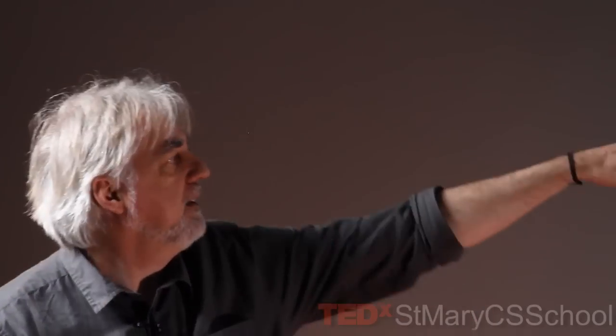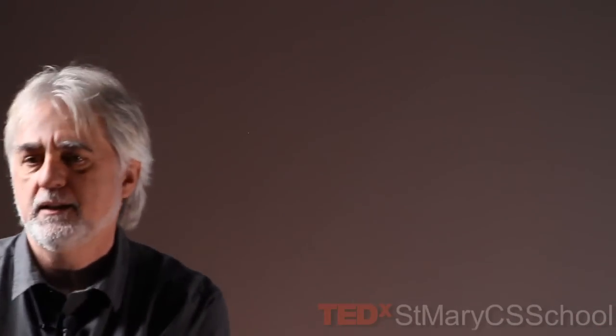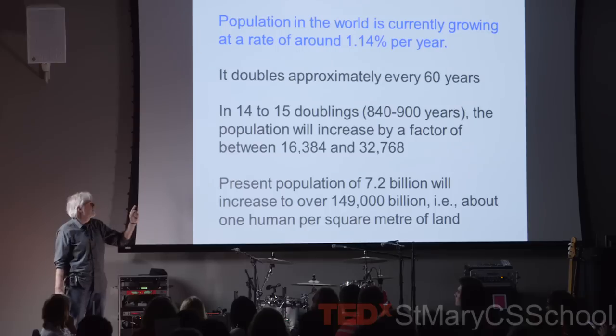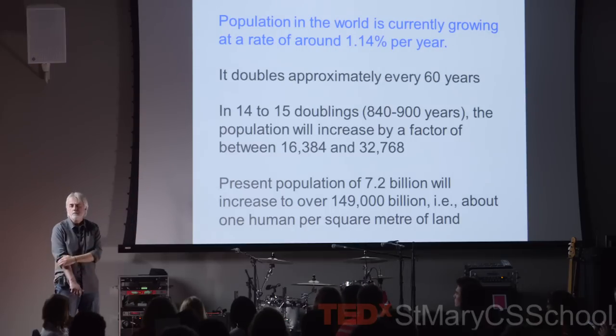What does that mean? The present population of 7.2 billion will increase to over 149,000 billion — which means one human per square meter of land. Think of deserts, mountains, the Himalayas, any piece of land you can think of — there will be a human there. It took less than one minute of mathematics to show that this is impossible. Something — a big change — will have to happen. This relatively small increase in population will not be sustainable.